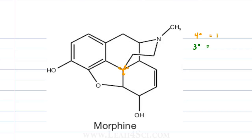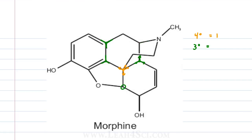Moving down to tertiary — we're looking for carbon with three bonds coming out of it. This carbon has three bonds coming out of carbon: that's tertiary, for one, two, three. This one looks tertiary but that's a bond to nitrogen, not carbon, so it doesn't count. This one has a bond to oxygen — doesn't count. Same thing — bond to oxygen — doesn't count, and same thing again. It looks like we have just three tertiary carbons.